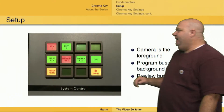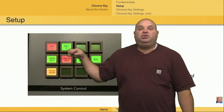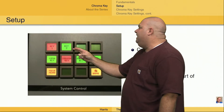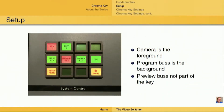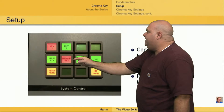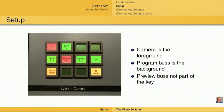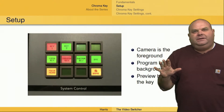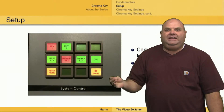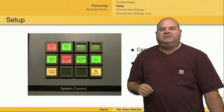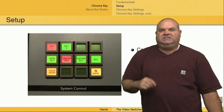In order to set up a chroma key in this particular switcher, we're going to push the effects key button. That's going to bring us to this menu where we can affect either key one or key two, because this switcher has the ability to do two effects keys. Right now I have key one selected, and I'm going to select chroma key for the type of key I want to perform. The camera is in the foreground, so on the key bus — which is above the program bus — we've selected the camera as the foreground.